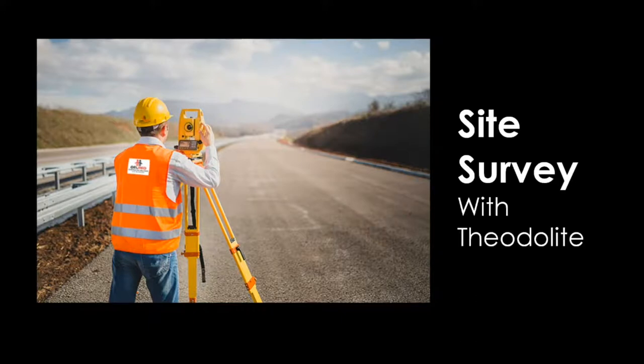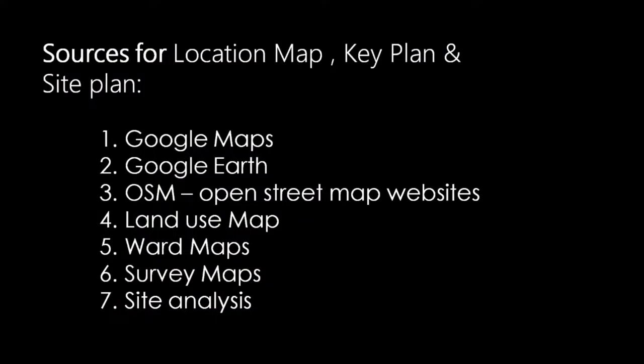With the help of a theodolite survey, they will do the survey and give the details of the site including its topography, vegetation and other existing structural details. The sources for the location map, key plan and site plan are Google Maps, Google Earth, OpenStreetMap websites, land use maps, ward maps, survey maps and through site analysis.